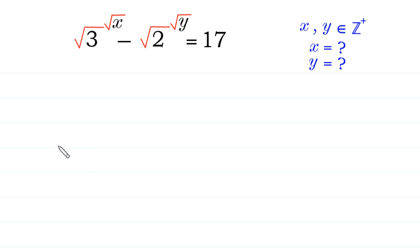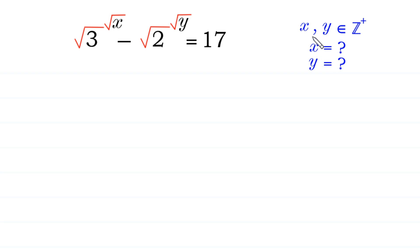Hello, welcome to how to solve this radical equation. Square root of 3 to the power square root of x minus square root of 2 to the power square root of y is equal to 17. We need to find the values of x and y, where x and y are positive integers.